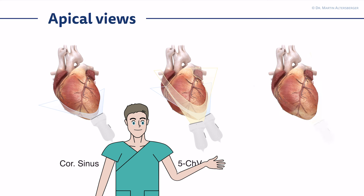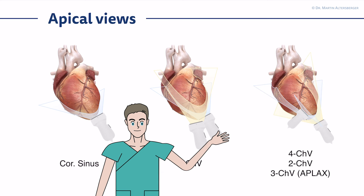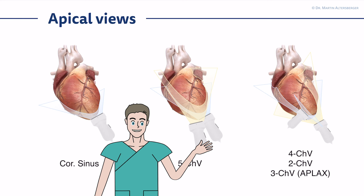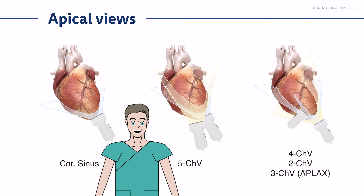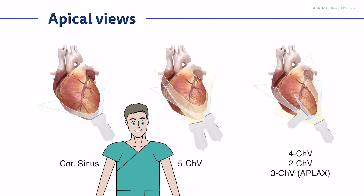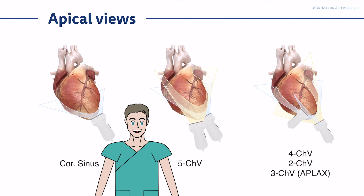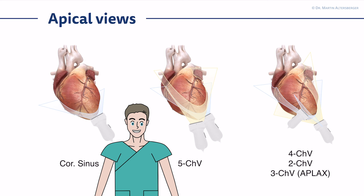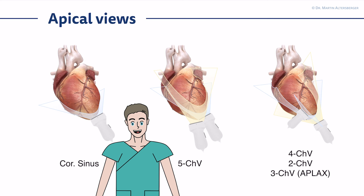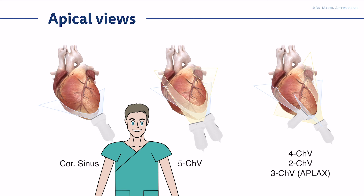In the four chamber view, the marker is positioned left lateral. With a rotational movement you get to the two chamber view and the three chamber view, also called the apical long axis view. You rotate counterclockwise — 60 to 90 degrees from the four chamber view to reach the two chamber view, and approximately 30 more degrees to reach the apical long axis view. Tilting the transducer more steeply gives you the aortic valve and the five chamber view, while tilting the other direction gives the coronary sinus view.